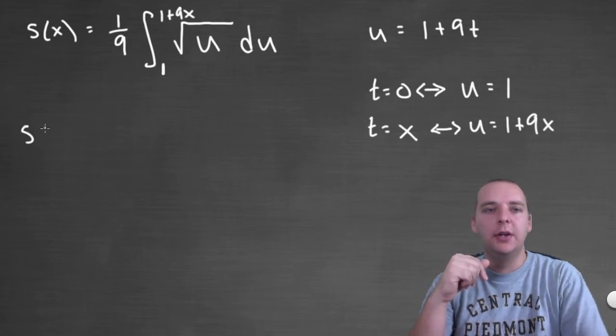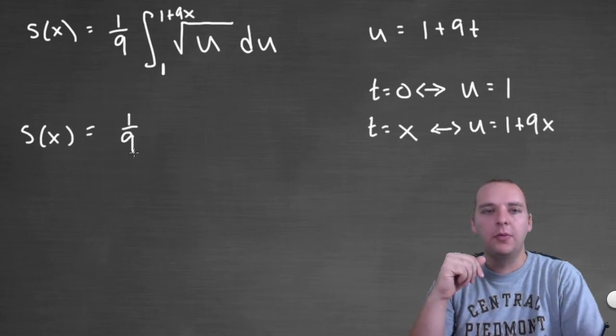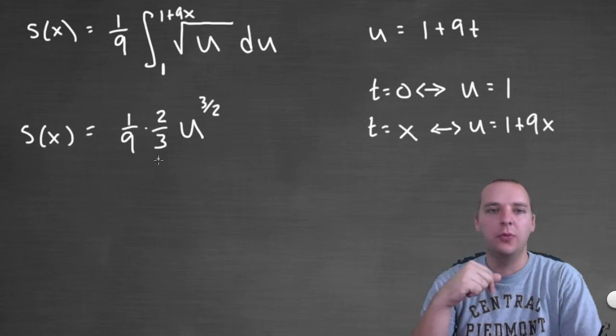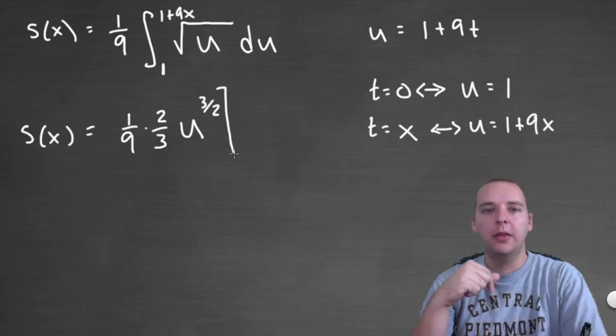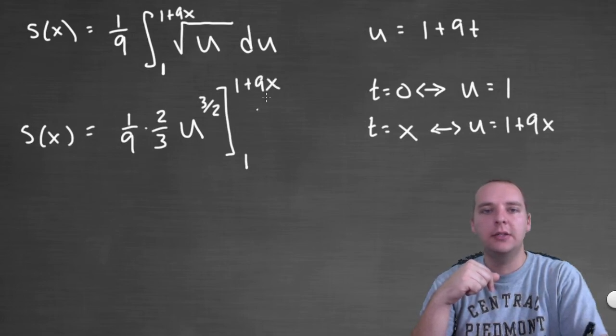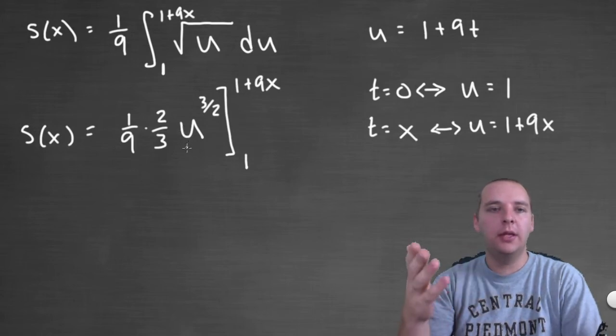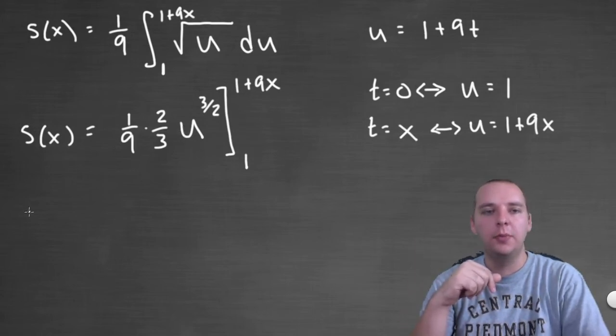So this lets us do the integration, because we only have u to the 1 half, that's quite easy to integrate. We have the 1 ninth is still there. The integral of u to the 1 half, u raised to the 1 half power, would be u to the 3 halves power, with a 2 thirds out front, that's the power rule of course. We'll put a bracket, we'll put a one, and then a 1 plus 9x, like this. And then we plug in the top, and we plug in the bottom, and subtract, and that will be pretty much it.